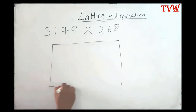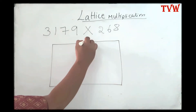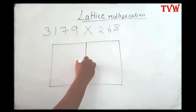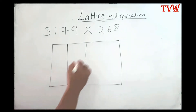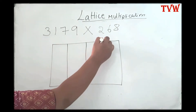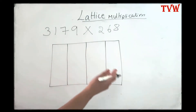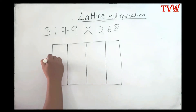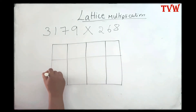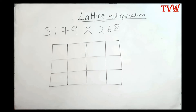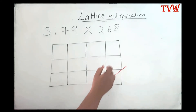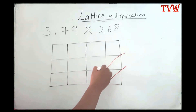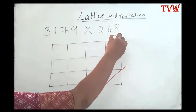Let me draw a box first. I need four columns, so let me equally divide it — I have four columns and three rows. The first thing we have to do is divide the boxes into triangles by drawing diagonals or slanting lines.